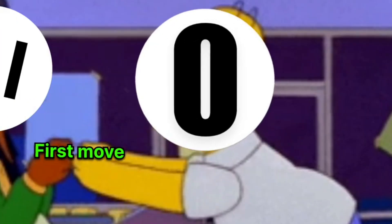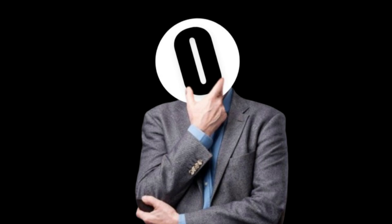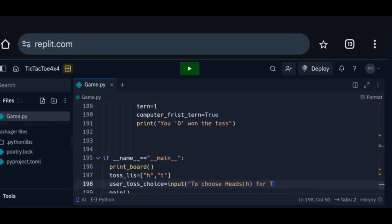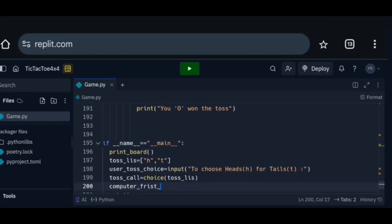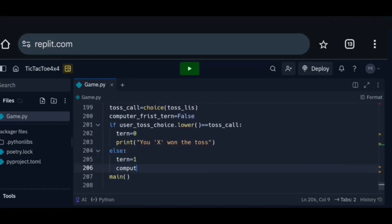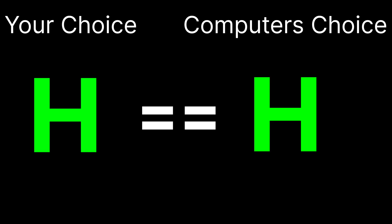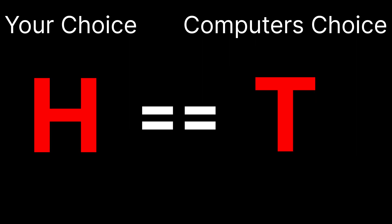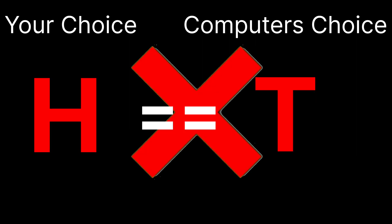Step 3. Now I'm thinking I should add a toss system that decides whether the AI or the human gets to make the first move, to make the game more unpredictable and interesting. You will be prompted to choose heads or tails, then the computer randomly picks heads or tails as well. If your choice matches the computer's choice, you get to make the first move. If not, the AI goes first. Simple as that.